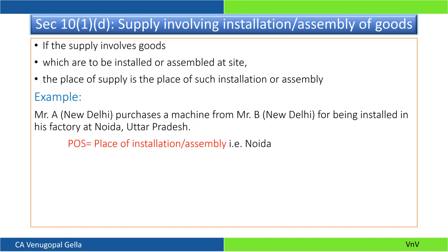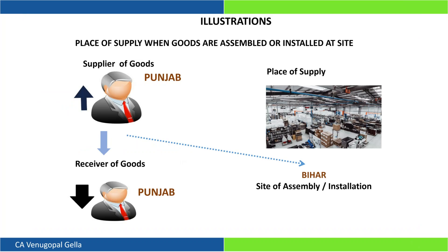In case of assembly or installation — say constructing a TV tower, lift, or similar — you go to the site, assemble and erect it. The place of supply would be the place of installation or assembly. For example, if a supplier of goods is in Punjab and I ask them to do installation and setup at a new location in Bihar, the place of supply will be wherever the assembly is happening, which is Bihar.